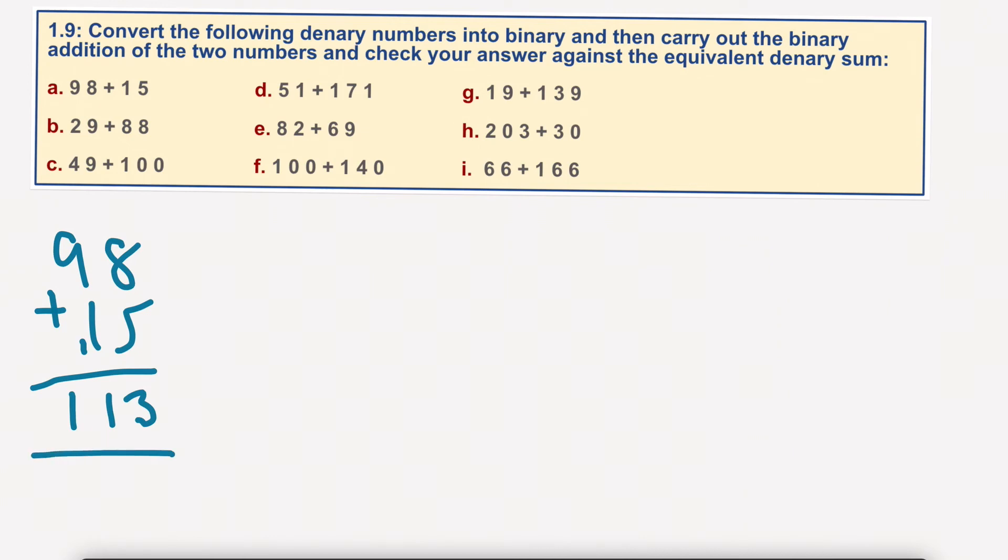Okay, so let's convert this into binary and see if we get the same answer. So, let's go 1, 2, 4, 8, 16, 32, 64, 128. Change of a pen colour. 98. Well, that means 1, 64, 1, 32, so that's 96.